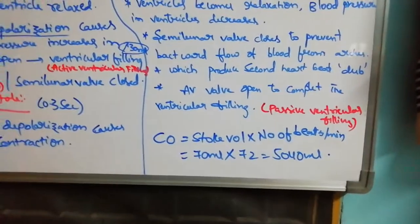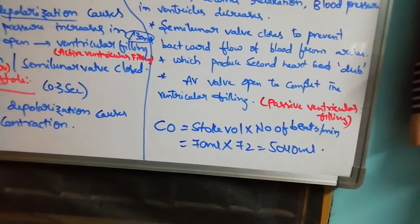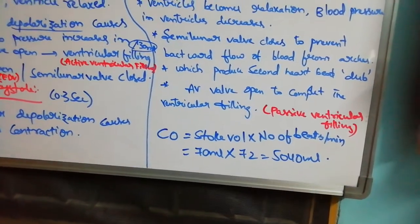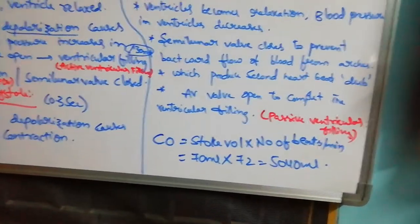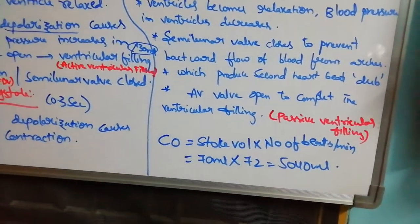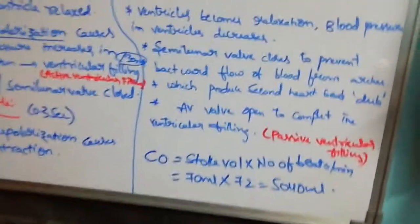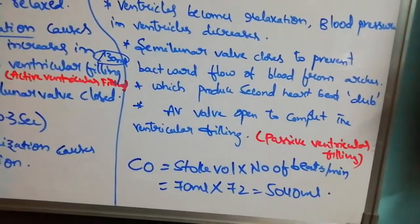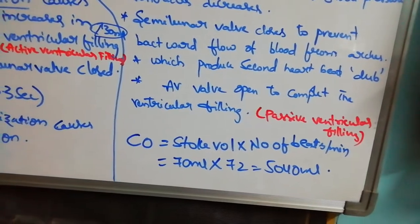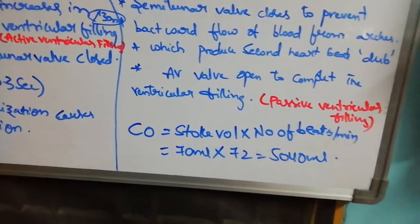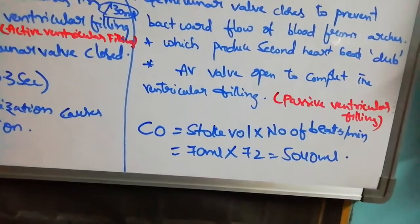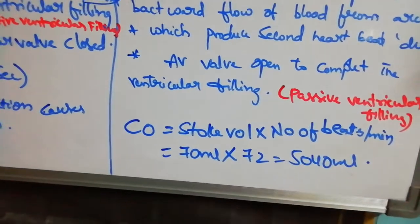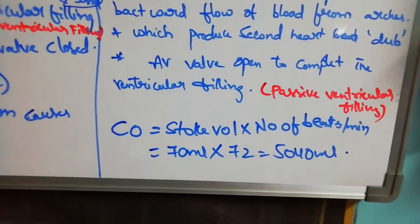Now, cardiac output equals stroke volume multiplied by number of beats per minute. Stroke volume is the amount of blood pumped by the ventricle per contraction — which is 70 ml. With 70 beats per minute, cardiac output equals 70 ml × 70 = 4900 ml, approximately 5 liters.